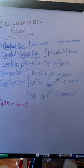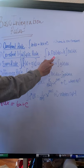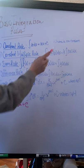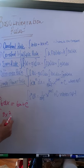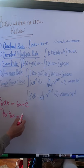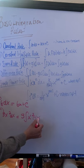The second rule is the multiple constant rule. If I have a constant being multiplied by a function, I can pull the constant out before integrating. For example, the integral of 3x squared dx becomes 3 times the integral of x squared dx.